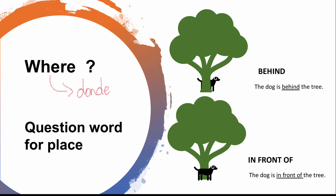Where is the dog? Behind. The dog is behind the tree. In front of. The dog is in front of the tree. Behind. In front of.